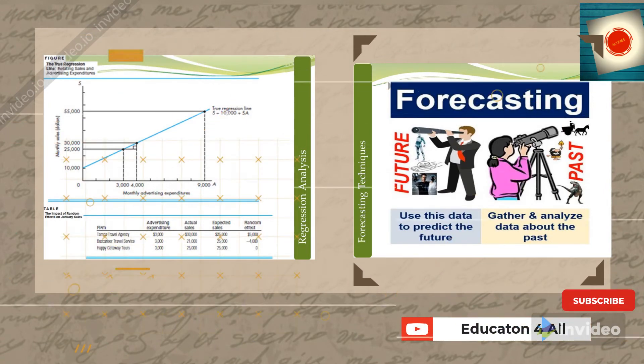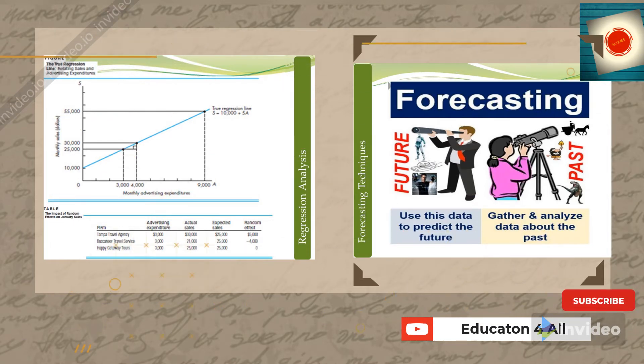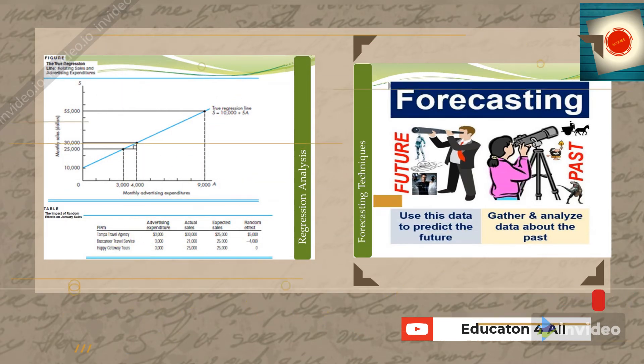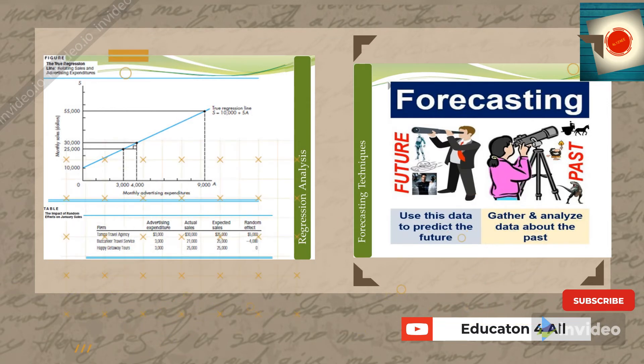The true regression line example, shown graphically and in tabular format, explains the relationship between sales and monthly advertisement expenditure. The regression line is the blue line going upward. When advertisement cost increases from $3,000 to $4,000, you can clearly see the impact on monthly sales, moving from $25,000 towards $30,000.